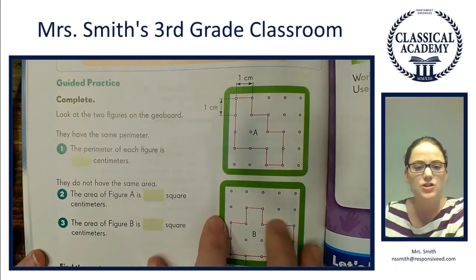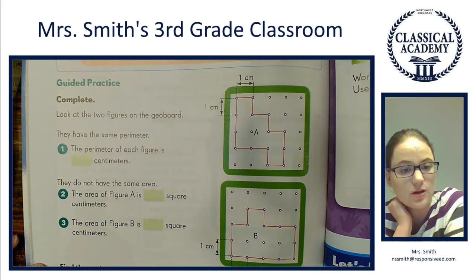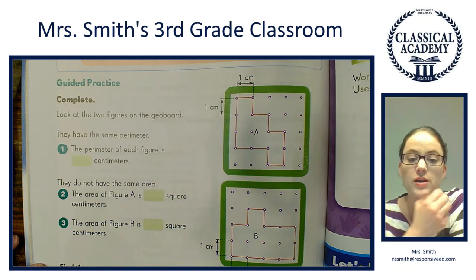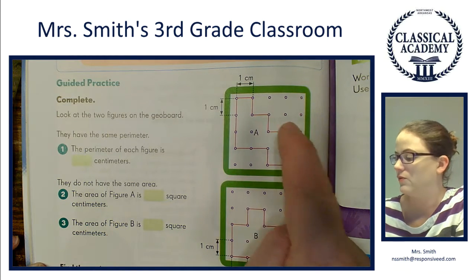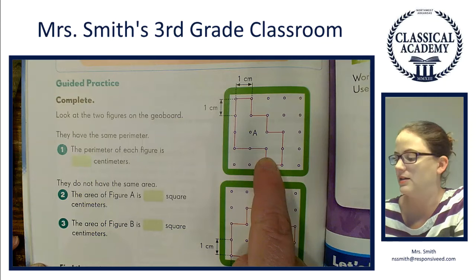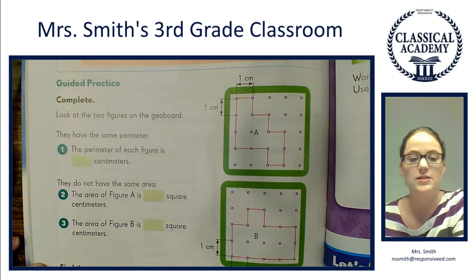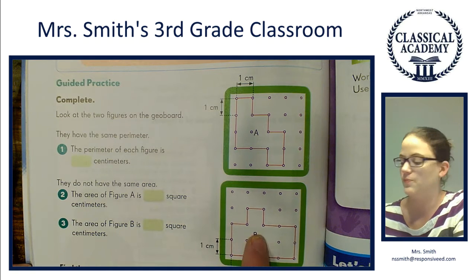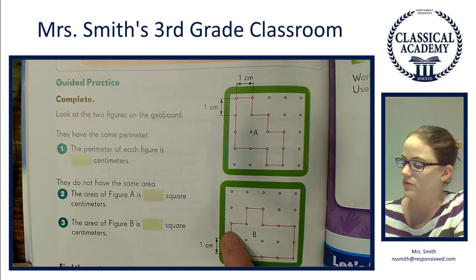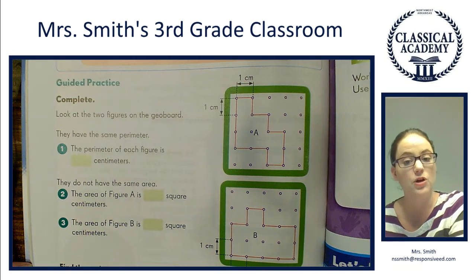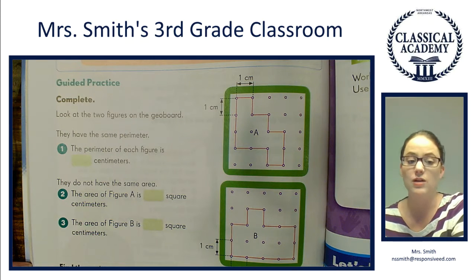Okay, look at these two figures on the geoboard. They have the same perimeter. The perimeter of each figure is... let's count: 1, 2, 3, 4, 5, 6, 7, 8, 9, 10, 11, 12, 13, 14 centimeters. Let's check this one too: 1, 2, 3, 4, 5, 6, 7, 8, 9, 10, 11, 12, 13, 14. They both have a perimeter of 14 centimeters, but they do not have the same area.